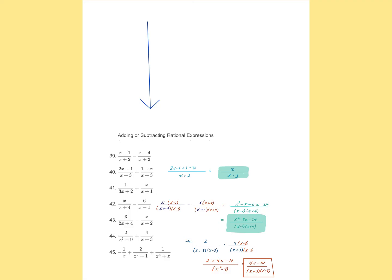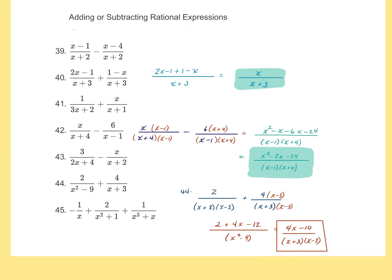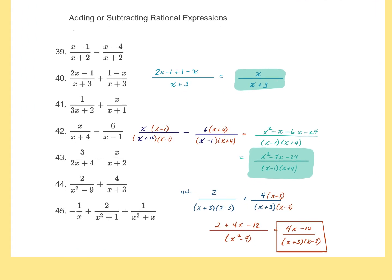Let's go over homework from last night. The odds are on Calc Chat; here are the evens. Problem 40 should have been x over (x+3). Problem 42: (x²-7x-24) over (x+1)(x+4).